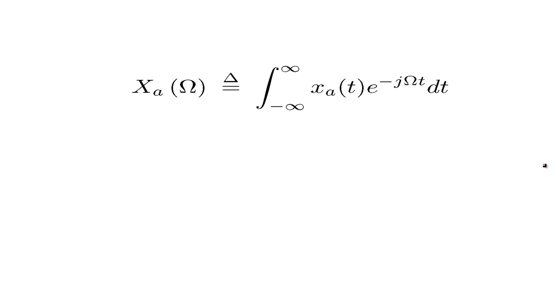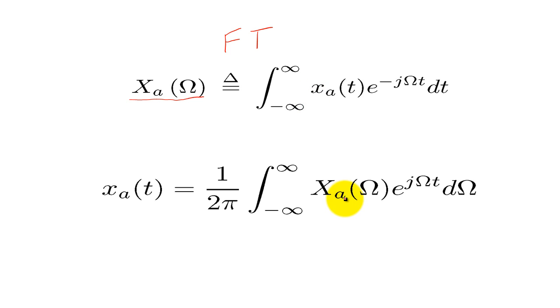We are able to directly examine the frequency content of signals such as X sub A of T by using the Fourier transform shown above. The frequency domain signal is represented by X sub A of Omega, where Omega is measured in radians per second. Similarly, we are able to transform X sub A of Omega back to the time domain by using the inverse Fourier transform.